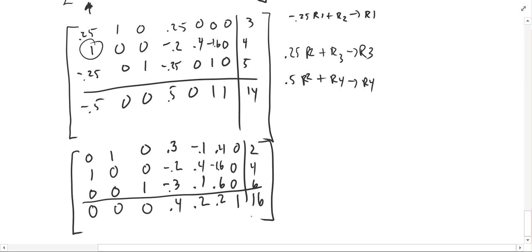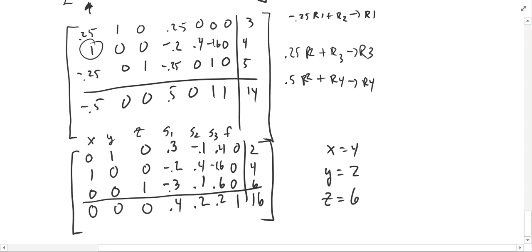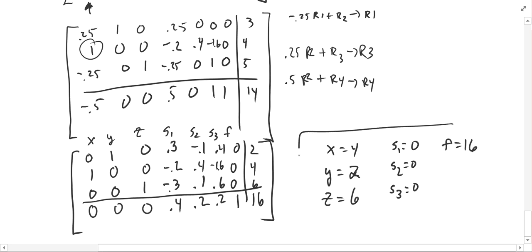The columns were x, y, z, s1, s2, s3, and f. Reading the solution: x equals 4, y equals 2, z equals 6. The slack variables s1, s2, and s3 are all 0. And f equals 16. That is our solution.